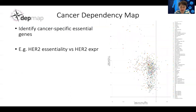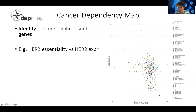A potentially good cancer target gene is illustrated by the HER2 gene, whose official name is ERBB2. The x-axis again shows the CRISPR screen selection score. Overall, HER2 is only a little bit negatively selected — around minus 0.2 or 0.3 on average — which is not too strong a phenotype.